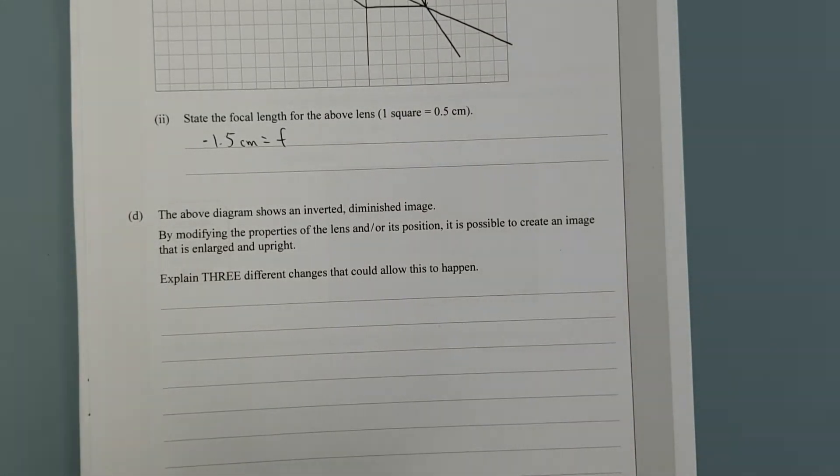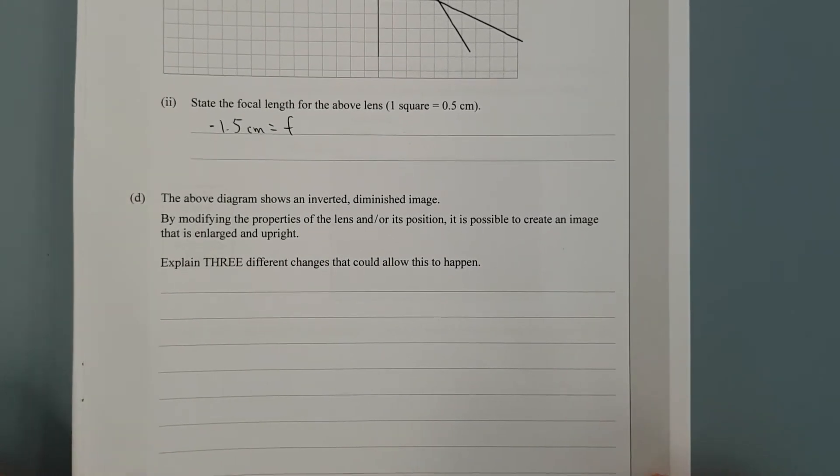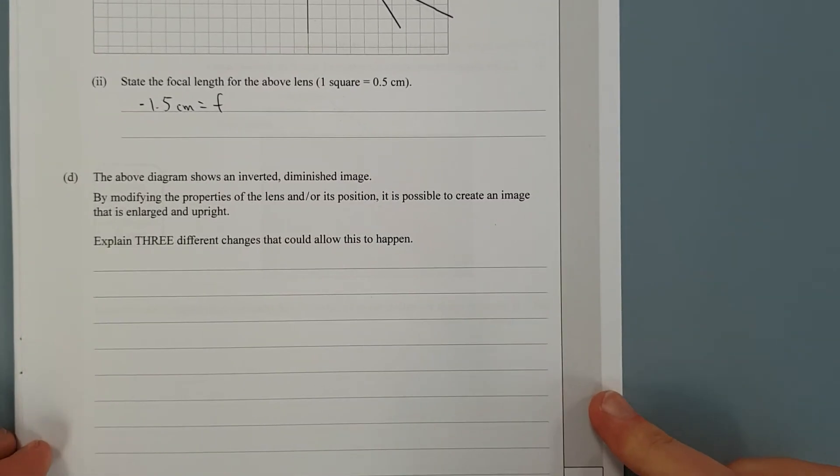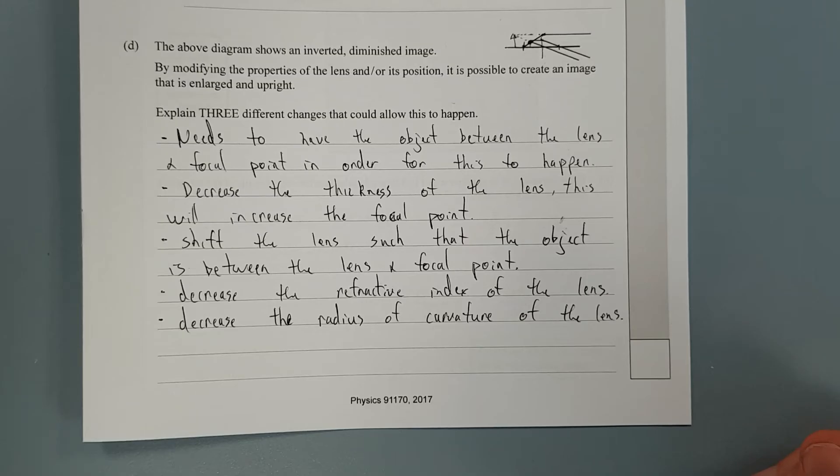The above diagram shows an inverted, diminished image. By modifying the properties of the lens or its position, is it possible to create an image that is enlarged and upright? Explain three different changes that could allow this to happen. So I'm going to pause the video and go through the answer.